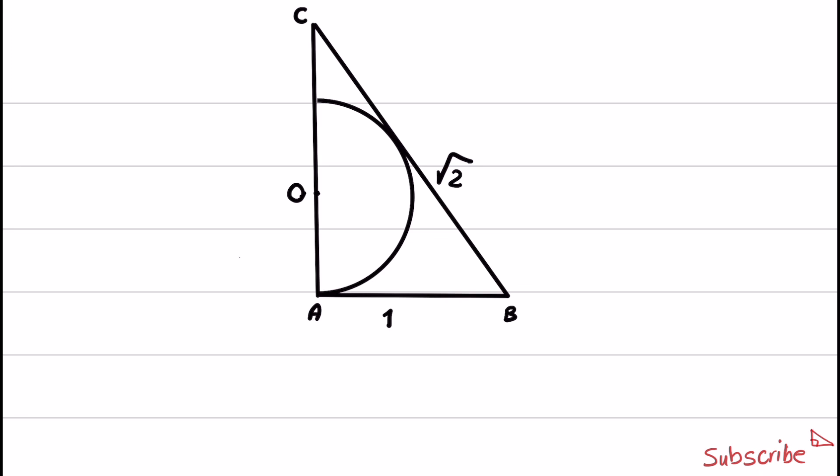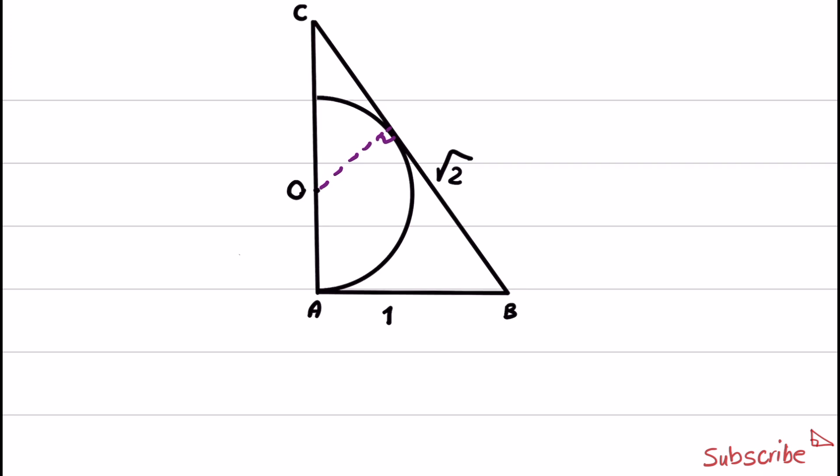A common technique that is used when a tangent to a circle is given is to add the radius to the figure. So first, I'm going to add this radius, and we know that radius is perpendicular to tangent at intersection point. Another radius that I will add is this one, which basically is drawn. I just want to highlight it, and the question mentioned that AB is tangent to this half circle, so this one is also a right angle.